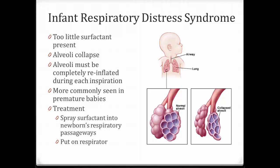The other option is to put the baby on a respirator. However, a respirator has its own problems because it forces air into the lungs with positive pressure, which can actually cause tissue damage. So the longer a baby is on a respirator, the more likely they are to have lung damage throughout the rest of their lives.